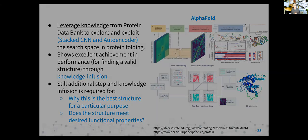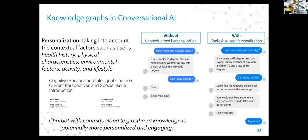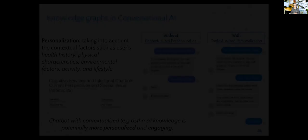Here's an example of contextualizing personalization. You ask Alexa about today's weather and it says 'enjoy your play.' But if the system knows the patient is an asthma patient and there is ragweed pollen, the system can be a lot smarter. It can find out what the pollen count is today - available through a web service - and then reason to say: 'The weather is good, but you have this phenotype and this potential symptom that has been shown to occur. Make sure you take your rescue medication with you.'